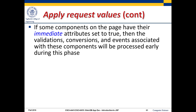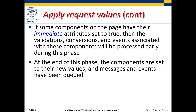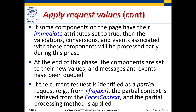If some components have the immediate attribute set to true, then validations, conversions, and event handling can be short-circuited — if you see a conversion error, you can say just send me the messages back and don't do anything else. Another case is what is called a partial request, usually generated by AJAX calls. The partial context is retrieved and the partial processing method is applied internally within the lifecycle, allowing you to retrieve parts of pages without going through the entire process.